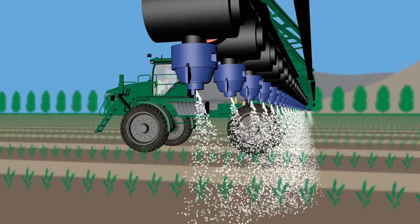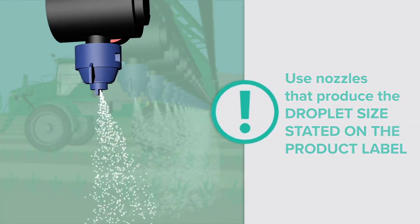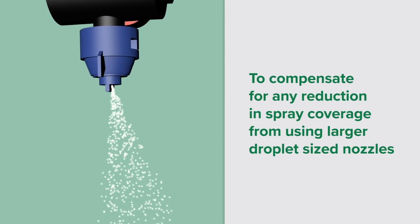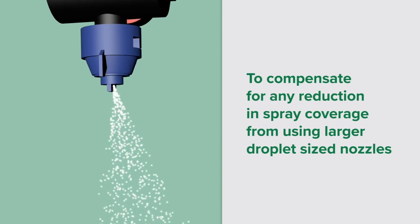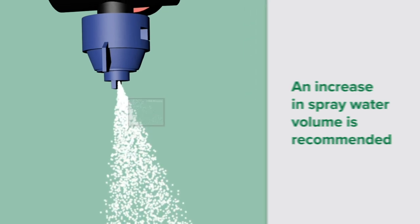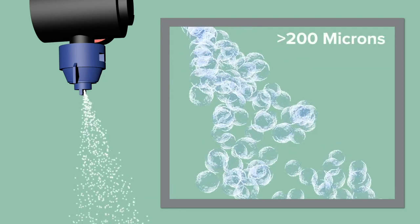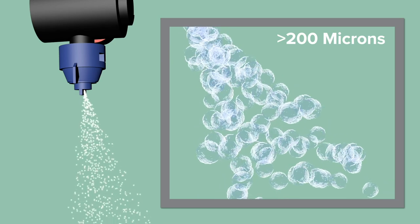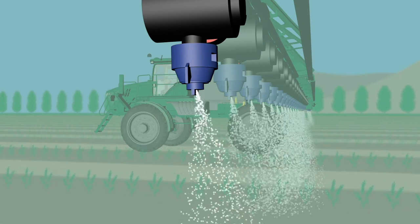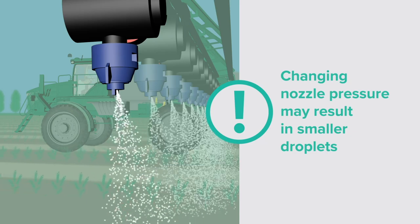Droplet size is also an important factor in minimising spray drift. Always use nozzles that will produce the droplet size stated on the product label, and always select the coarser spray quality that will provide an effective level of control. To compensate for any reduction in spray coverage resulting from using larger droplet sized nozzles, an increase in spray water volume applied is recommended to maintain product efficacy. As a guide, droplets smaller than 150 microns are likely to be carried away by the wind, while droplets larger than 200 microns are likely to hit your target. It is also important to operate the nozzles at the pressure they are designed to deliver at set water volume, as changing nozzle pressure will alter the droplet spectrum produced and may result in the production of more smaller driftable droplets.